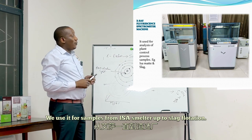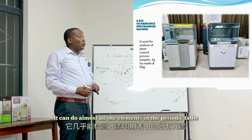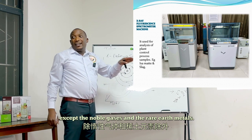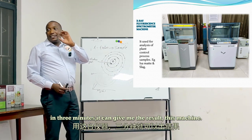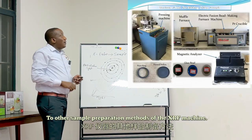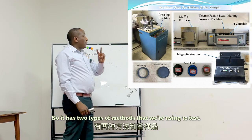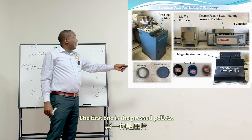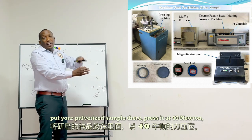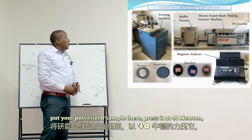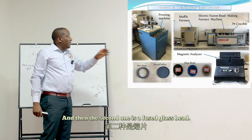The XRF is used for analysis of plant control processes — from the ICF smelter through to slag flotation. It can do almost all elements in the periodic table except noble gases and rare earth metals, and gives results in three minutes. It has two sample preparation methods: the first is pressed pellets — you get the ring, put your pulverized sample in, press at 40 Newtons, and get a pellet that the XRF can analyze. The second is a fused glass bead.